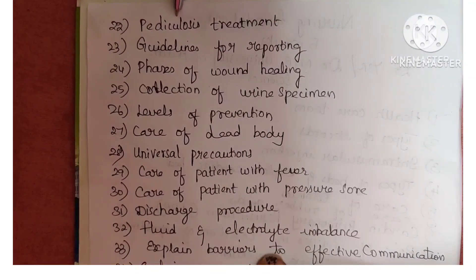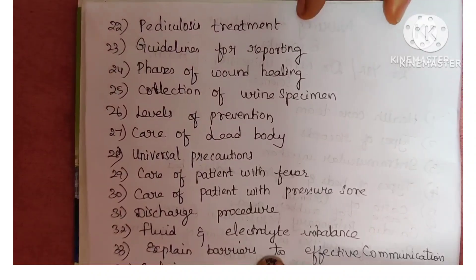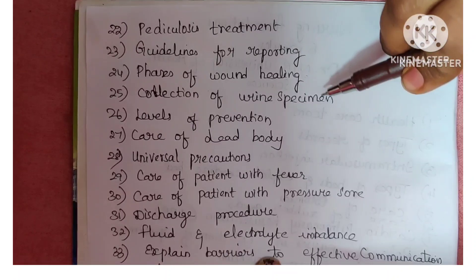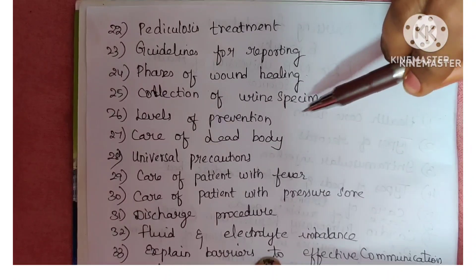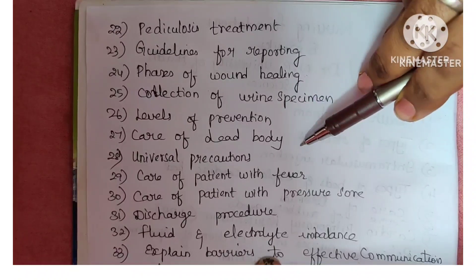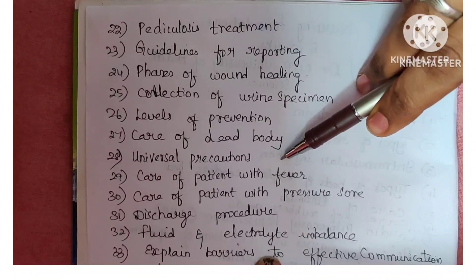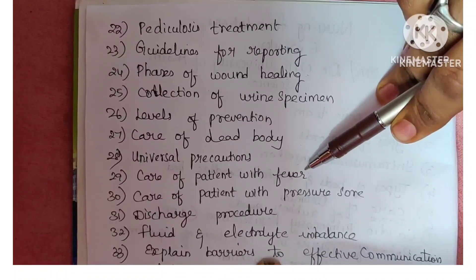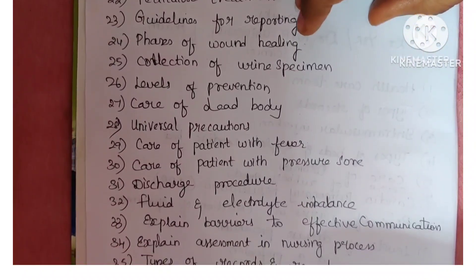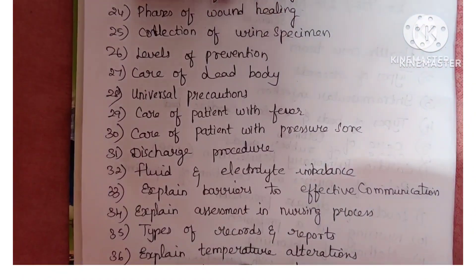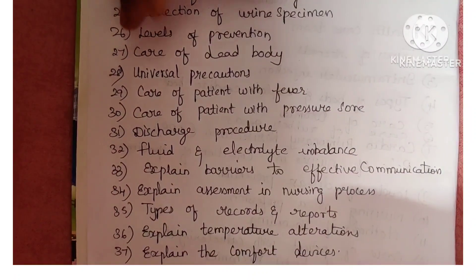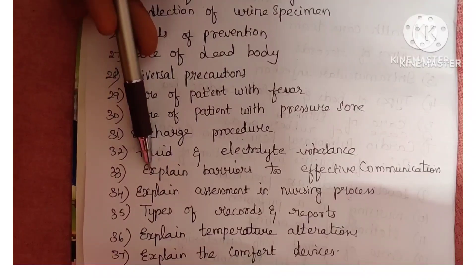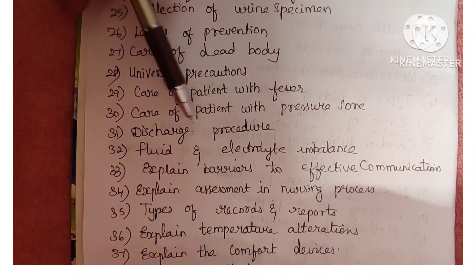The 22nd question is pediculosis treatment. Next is guidelines for reporting. Next is phases of wound healing. Next is collection of urine specimen. Next is levels of prevention. Next is care of dead body. Next is universal precautions. Next is care of patient with fever. Next is care of patient with pressure sore. Next is discharge procedure. Next is fluid and electrolyte imbalance. Next is barriers to effective communication.